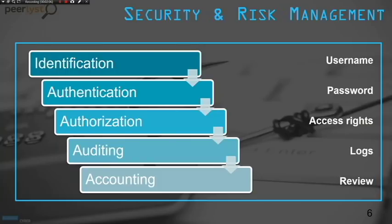Other frameworks include COBIT and COSO, which define what needs to be achieved but not how to achieve it — this is very different from ISO. The ISO 27001:2013 gives clear instructions on how to achieve the different points. So let's address security governance a little more. Security governance is a set of responsibilities and practices provided by the board and executive management, helping with strategic direction and ensuring objectives are achieved.